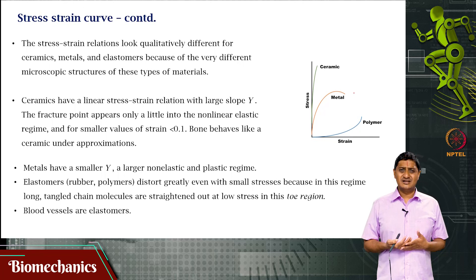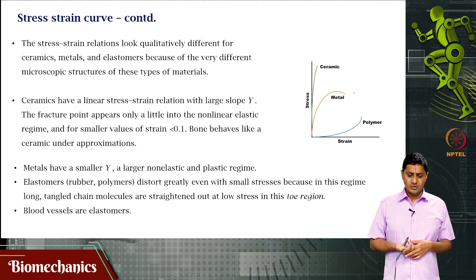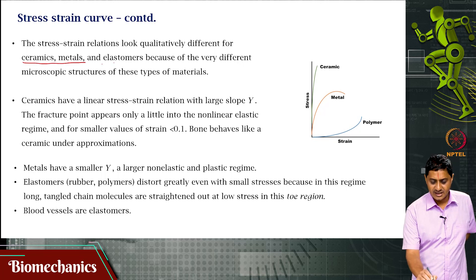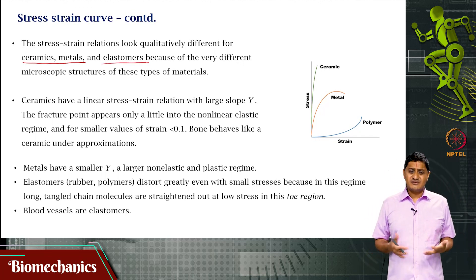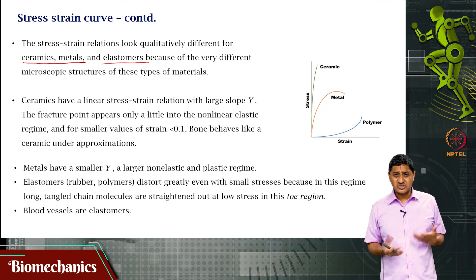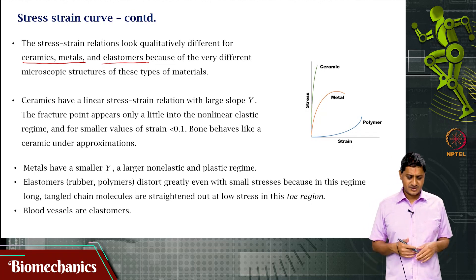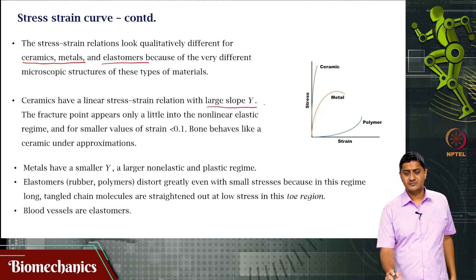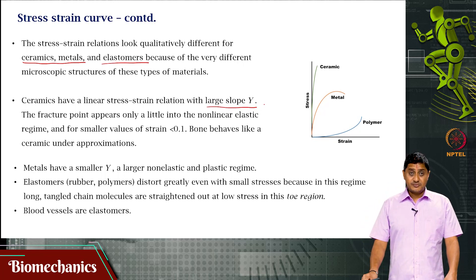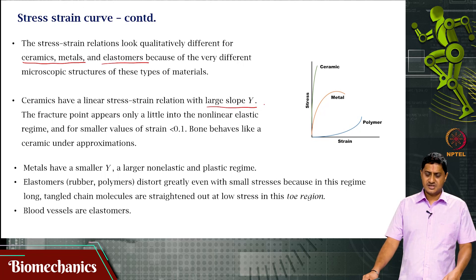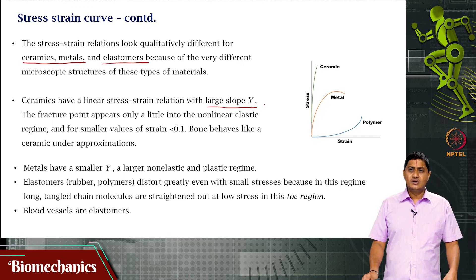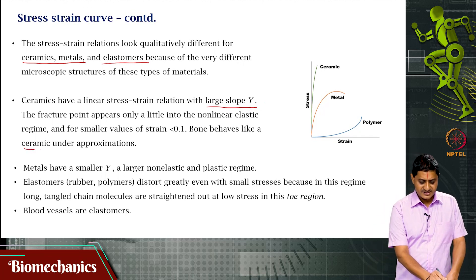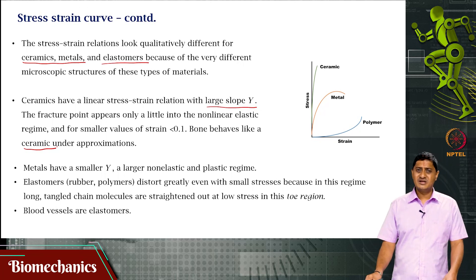This is a general stress-strain curve; it varies between materials — ceramics, metals, elastomers — because they are structurally different at the nano or micro levels. Ceramics have a linear stress-strain relationship with a large Young's modulus, and the fracture point appears only a little into the non-linear elastic region, for smaller values of strain less than 0.1. Bone can be modeled or compared to a ceramic under many approximations; under many assumptions, bone behaves almost like a ceramic. Metals have a smaller elastic modulus and a large non-elastic and plastic regime.